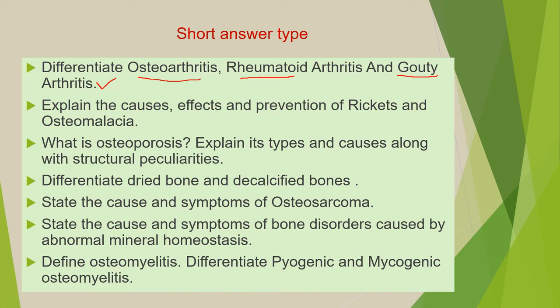Next is: explain the causes, effects, and prevention of rickets and osteomalacia. Next is: what is osteoporosis? Explain its types and causes along with structural peculiarities. Next is: differentiate between dried bone and calcified bones.